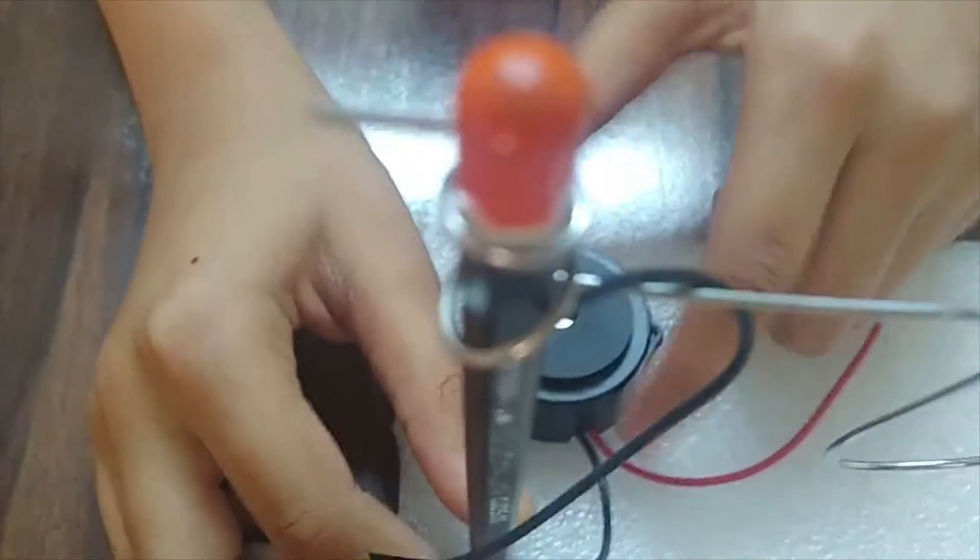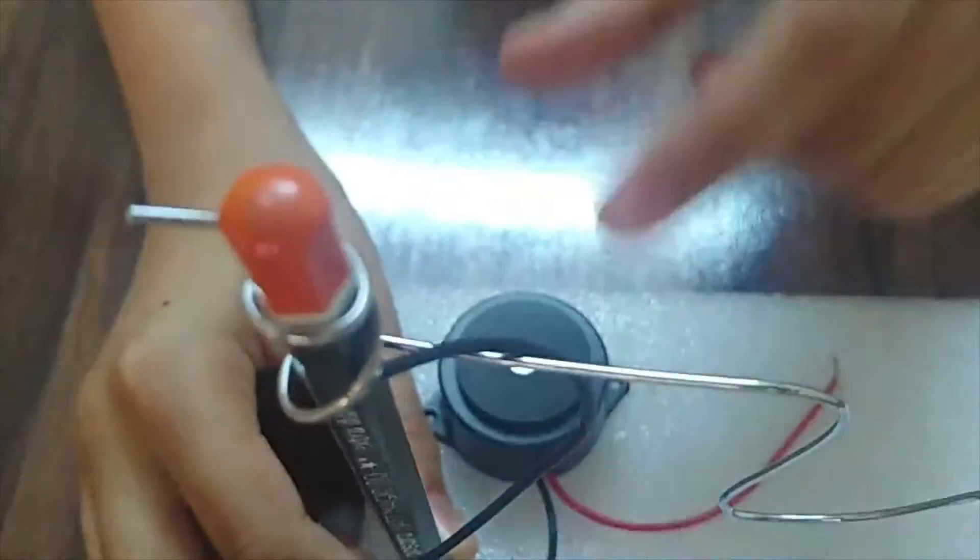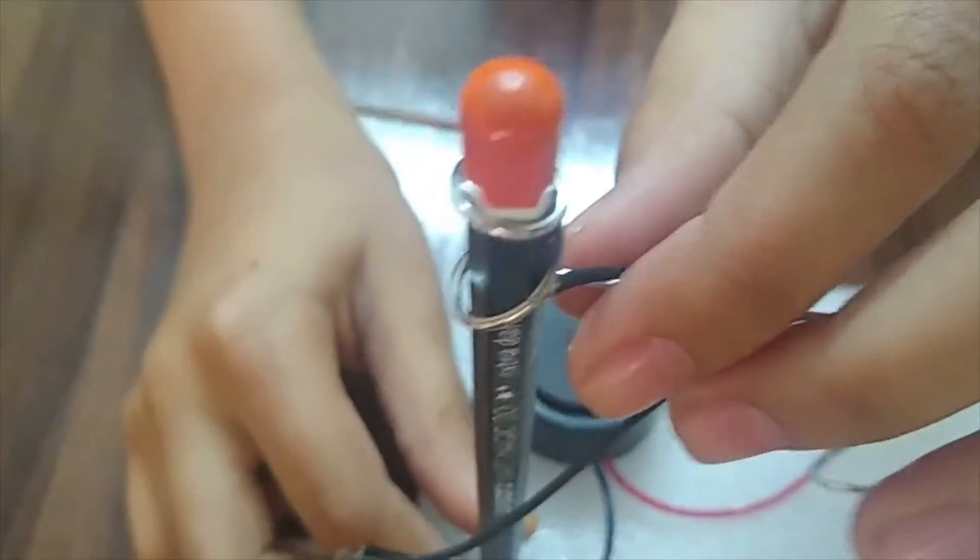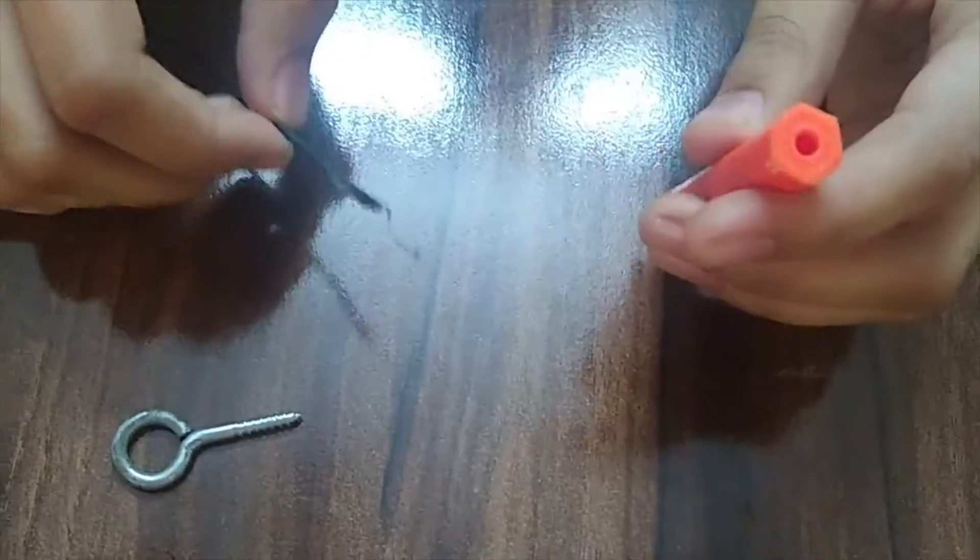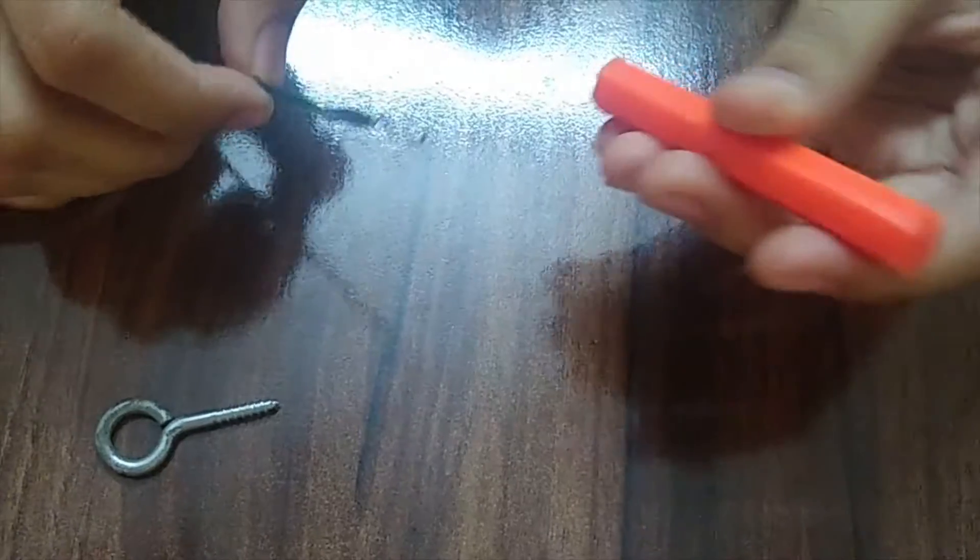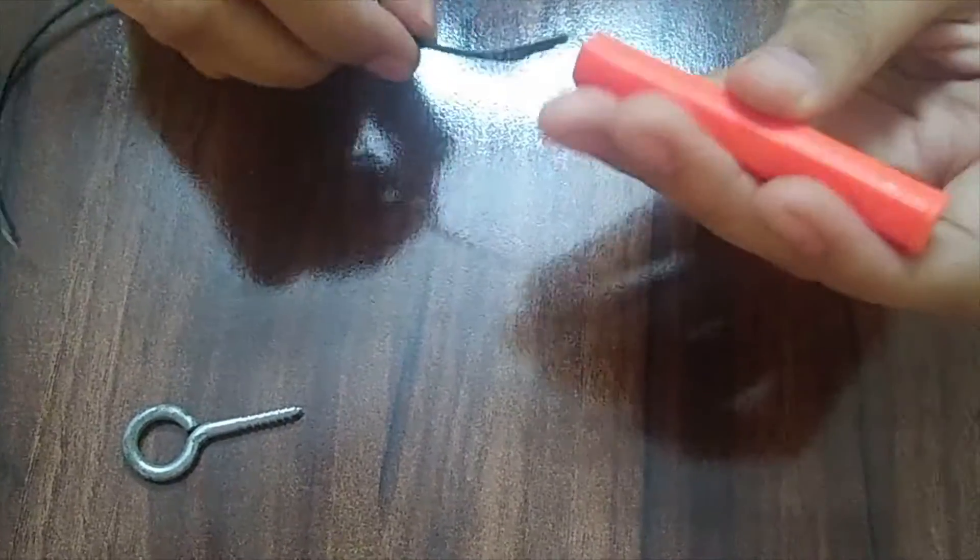Attach the metal wire along with the negative terminal of the buzzer to the pencil using the fabric or the cello tape. Make sure the plastic piece is hollow so we can pass the wire through it.